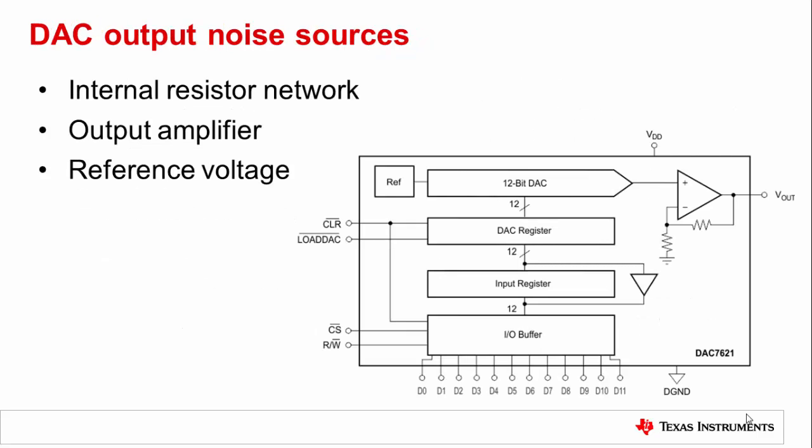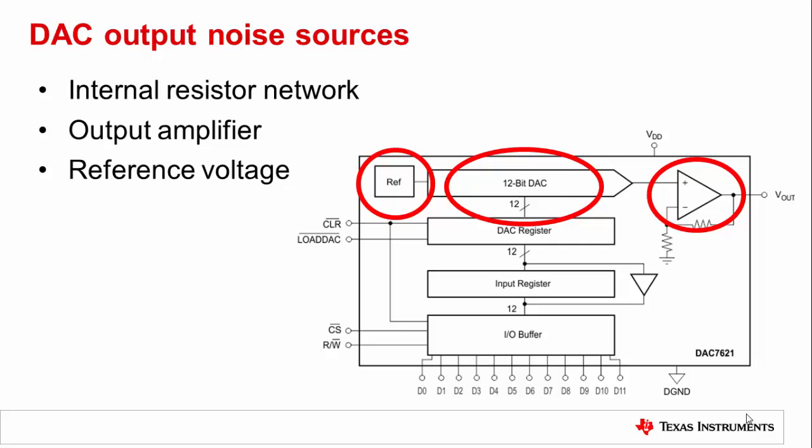Next we will talk about noise. As in almost any device, there is going to be noise associated with DACs. In noise-conscious applications, the goal is to minimize the DAC noise as much as possible to achieve optimal performance. In order to do that, we need to look at the three major sources of noise contribution: the DAC's internal resistor network, the output amplifier which may be integrated, and the reference voltage, also possibly integrated.